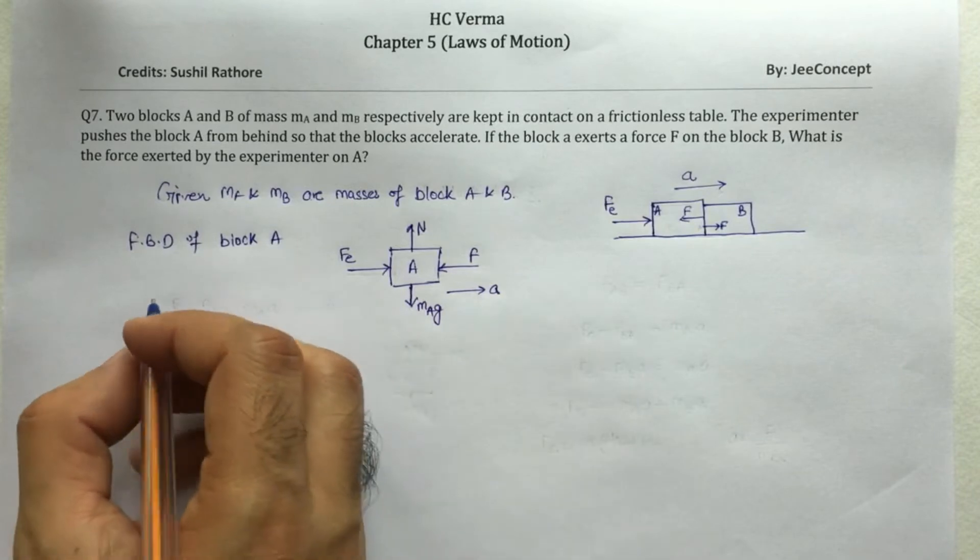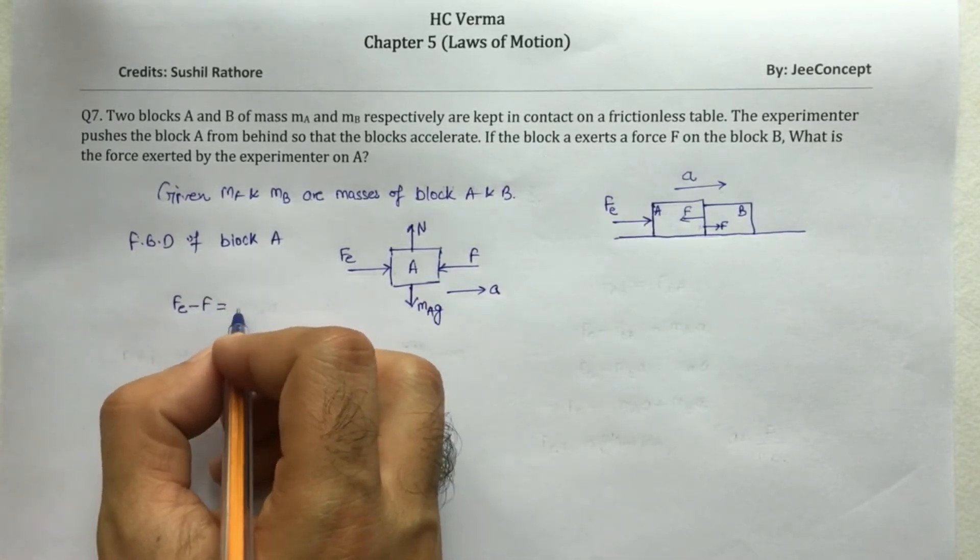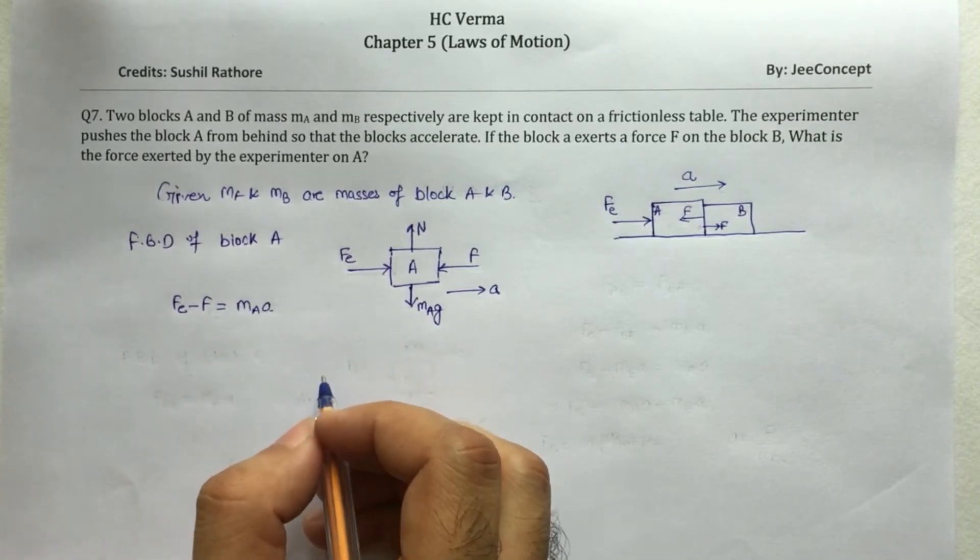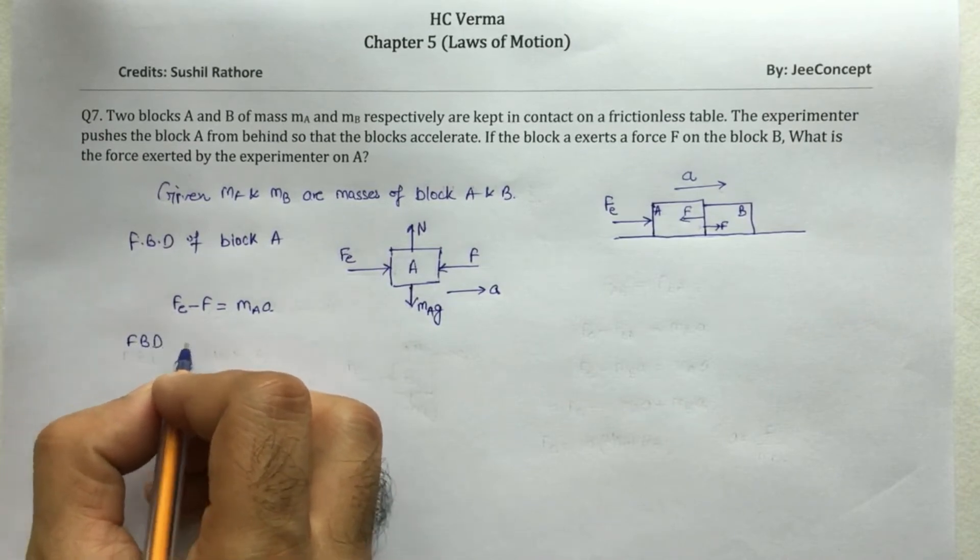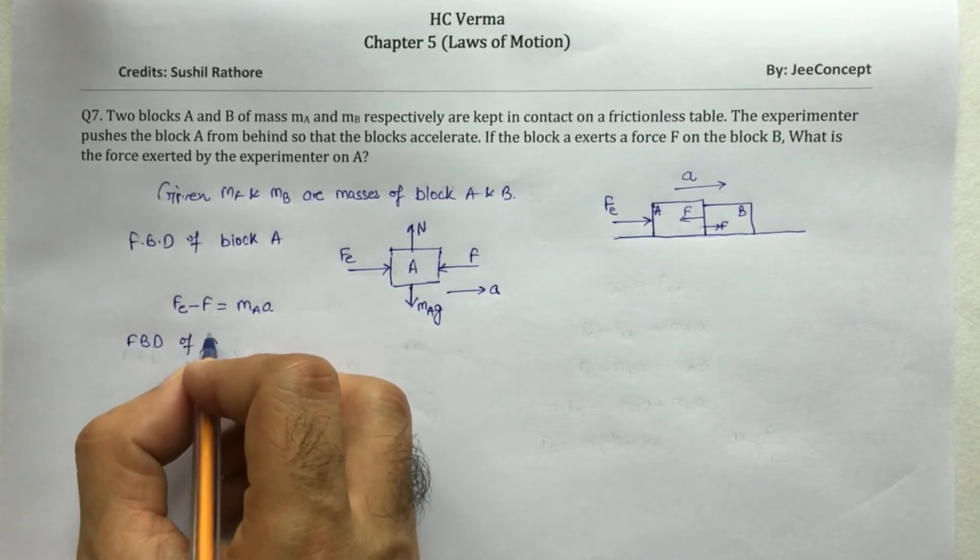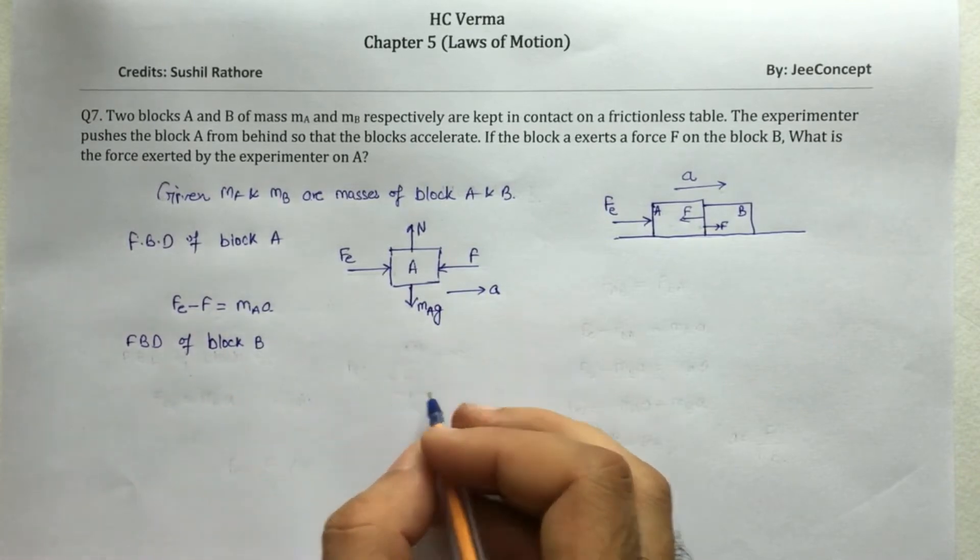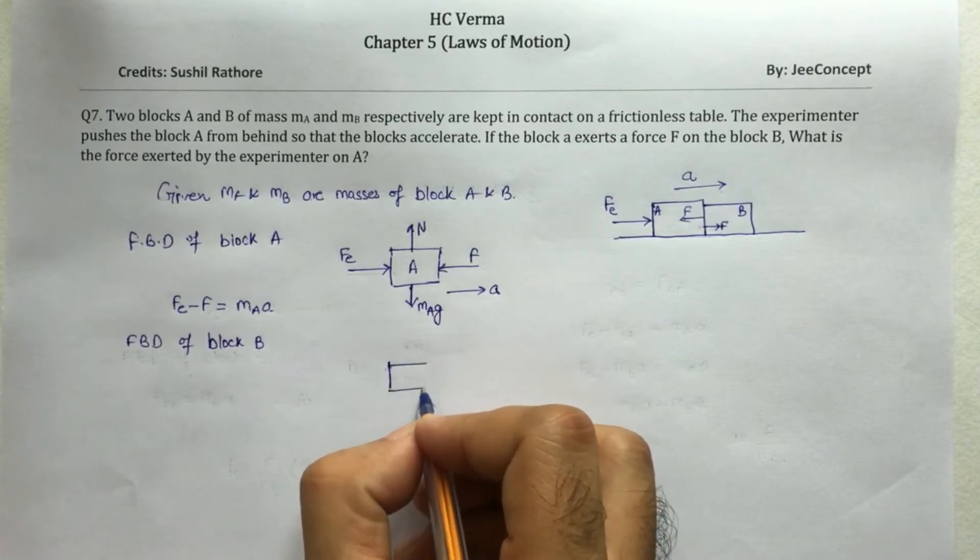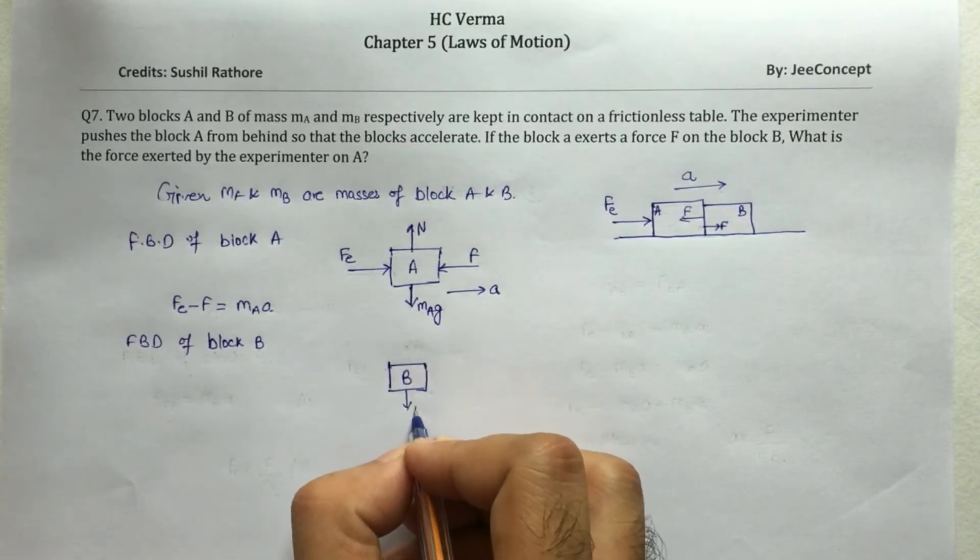Now FBD of block B. So this is, say this is a block B. There is a downward force, MB G and the reaction force is in upward direction.